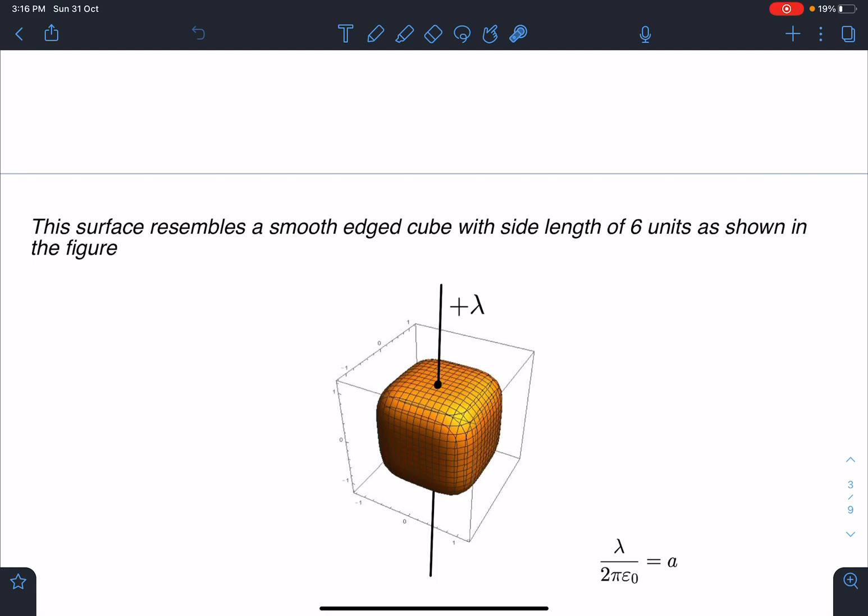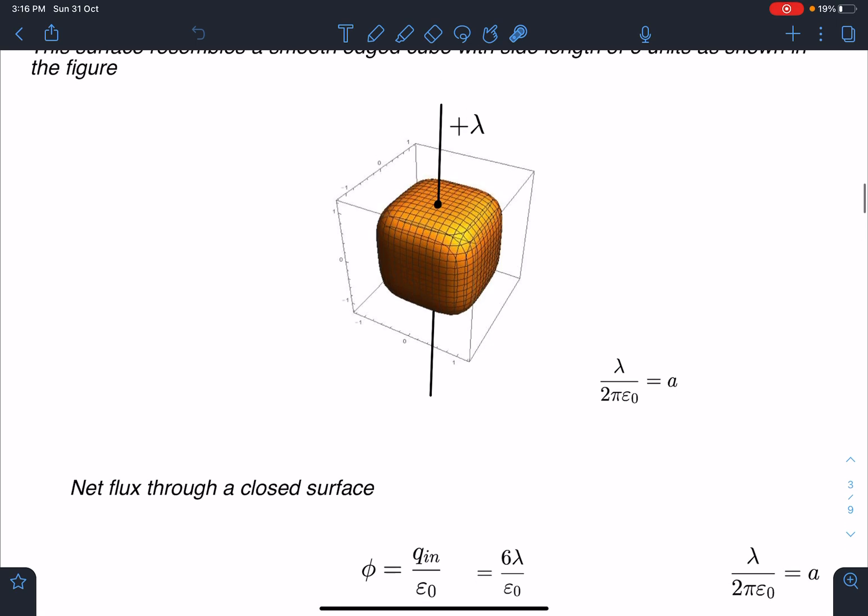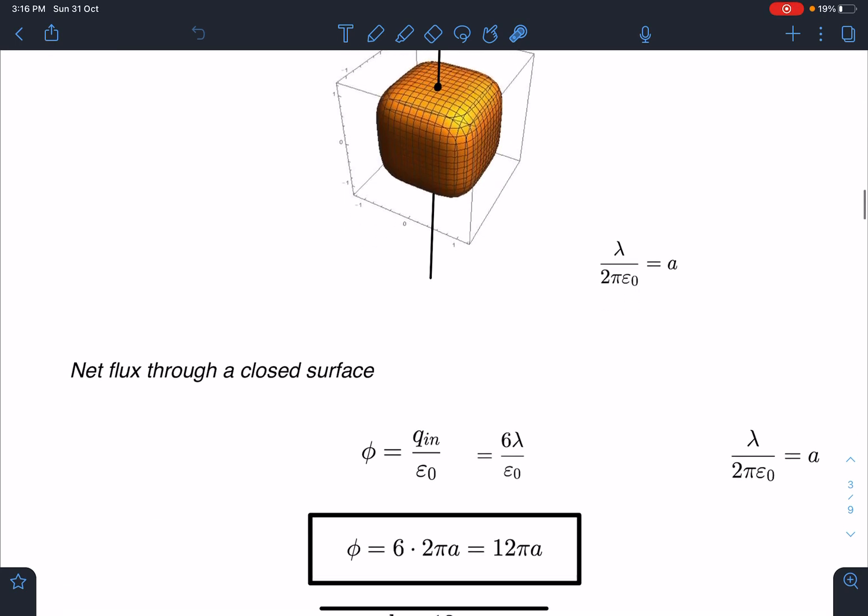Now you can see this wire, how much length is inside this? Because if we want to calculate this flux, I have to write net charge inside by epsilon naught. So since side length is 6 units, I can say 6 lambda is the net charge inside divided by epsilon naught. Now I can use this conversion lambda by 2 epsilon naught. So here lambda by epsilon naught value I can substitute as 2 pi a, so 6 into 2 pi a.